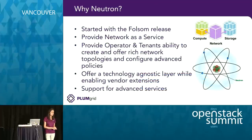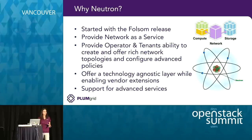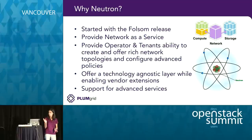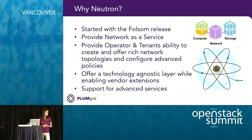Neutron was introduced with the Folsom release. Before that, it wasn't part of OpenStack. Its mandate from the very beginning was to deliver on the promise of network as a service — the ability for tenants and cloud operators to log into a dashboard, use an API, and self-service provision network resources. It's a big mandate, and there has been a huge effort from all of us as a community to deliver on that. The other mandate was to be a technology-agnostic layer.